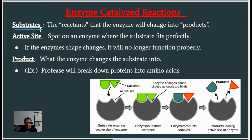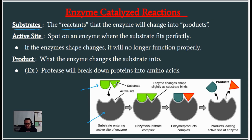Substrates are a new term — that's the reactants, kind of like the ingredients, what goes into a chemical reaction. The enzyme is going to change that substrate into something else. In this picture, the green thing is the substrate. The enzyme — shown here in gray — is going to change this green substrate and turn it into the products. The substrate fits into a spot on the enzyme that has the perfect shape, and that spot is called the active site — the spot on an enzyme where the substrate fits perfectly.